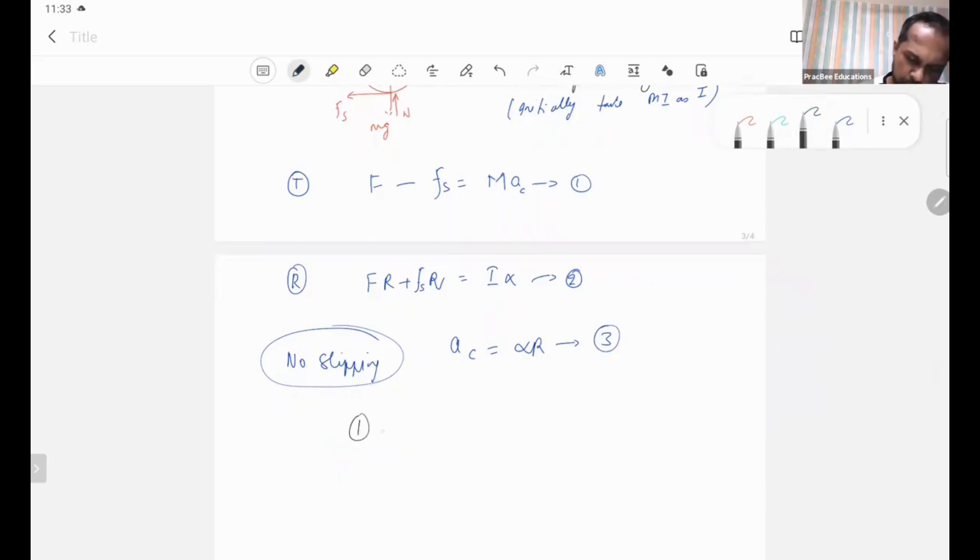If I divide the first equation and second equation by R and add them, I will get 2F. Fs cancels out. This equals M Ac plus I times alpha over R.